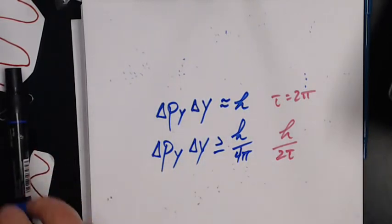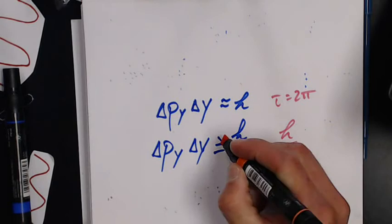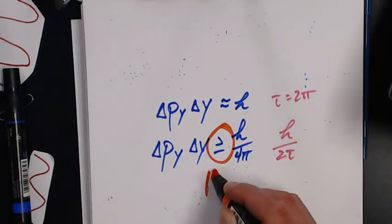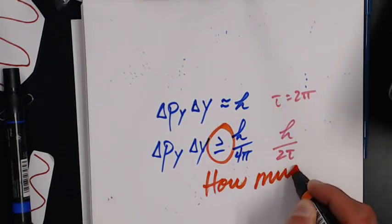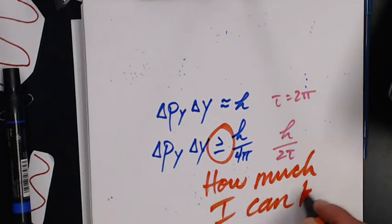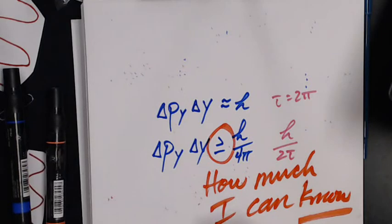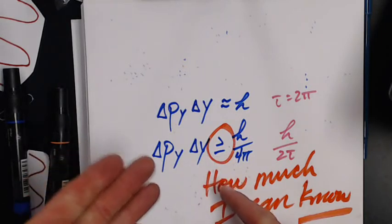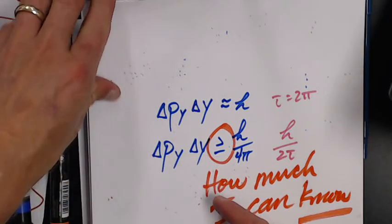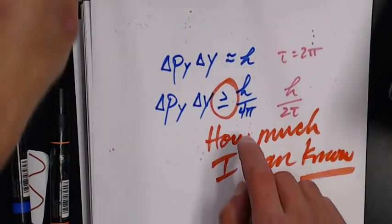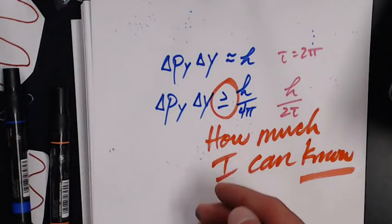What that means is there's a fundamental limit over how much I can know. It doesn't matter whether my techniques get better, I will always have some sort of uncertainty about where things are or where things are going.